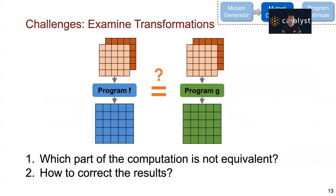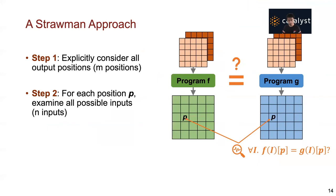Next, we need to examine the generated mutants and fix the incorrect results. There are two challenges: first, which part of the computation in our transformation is not equivalent? And second, how can we correct the results? To help understand the challenges, we consider a straw-man approach: to examine whether two programs, f and g, are equivalent, we explicitly consider all output positions, and for each output position p, we examine all possible inputs.